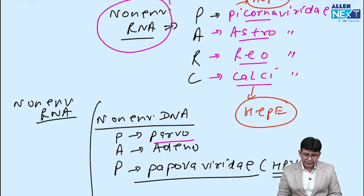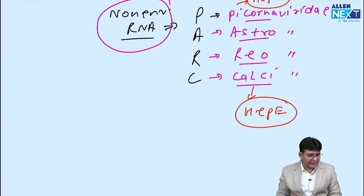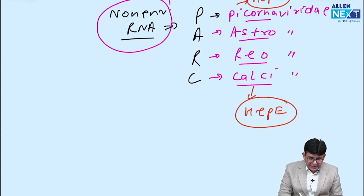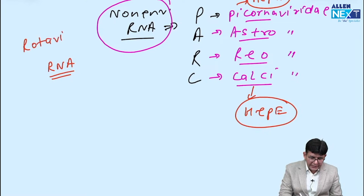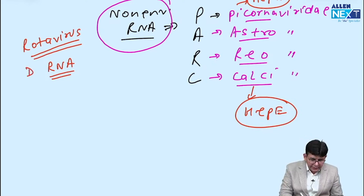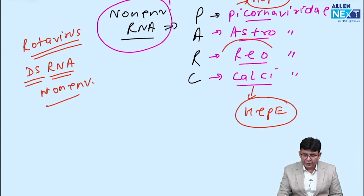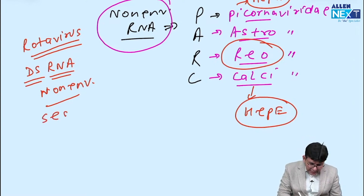Now applying the same logic to Rotavirus: Rotavirus is double-stranded RNA, and it is non-enveloped — as we just covered, Reoviridae is in the PARK mnemonic. Rotavirus is the most common cause of diarrhea in children. Its shape looks like a wheel with spokes, and it is double-stranded RNA and non-enveloped.